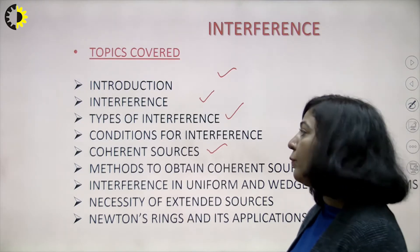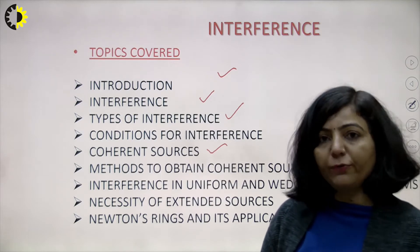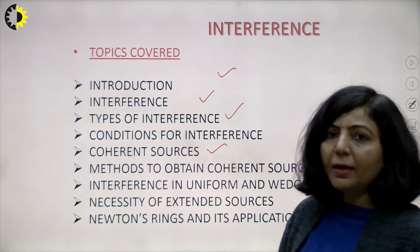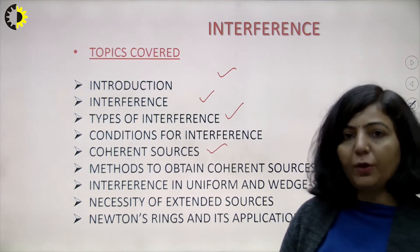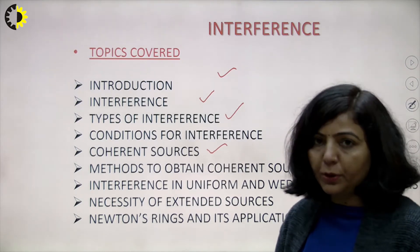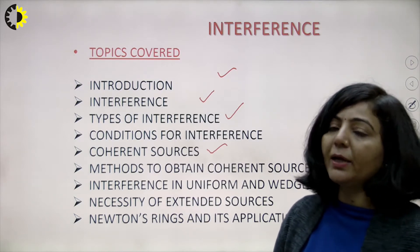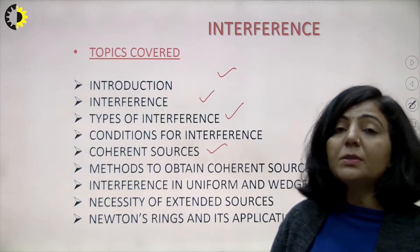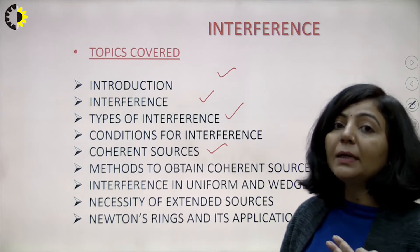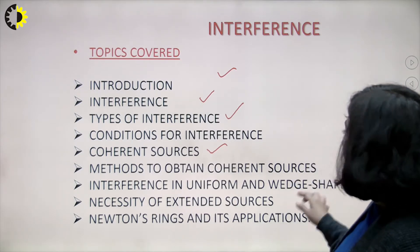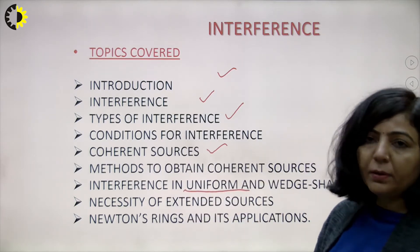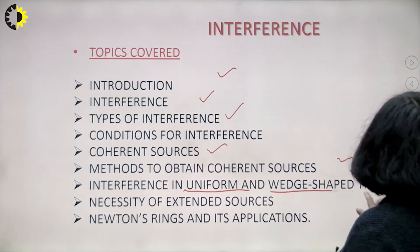That is done with the help of two methods. The first is known as division of wavefront, which you have studied in lower classes — for example, Young's double slit experiment. The second method is division of amplitude. In our chapter on interference, we are discussing examples of interference in thin films of uniform thickness and non-uniform thickness, which are examples of division of amplitude.